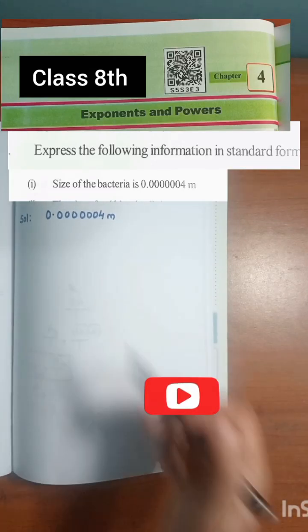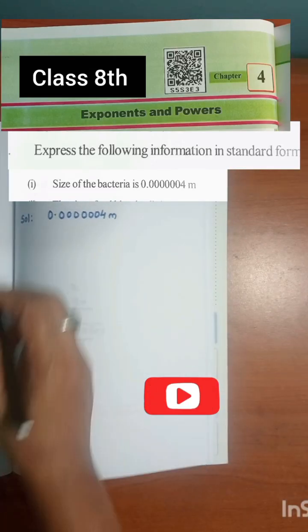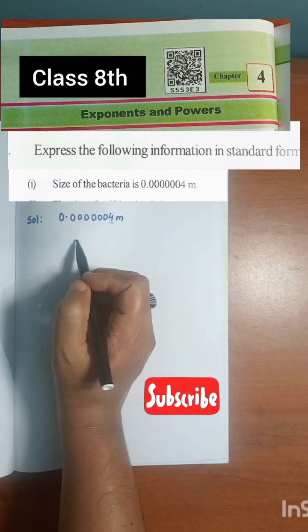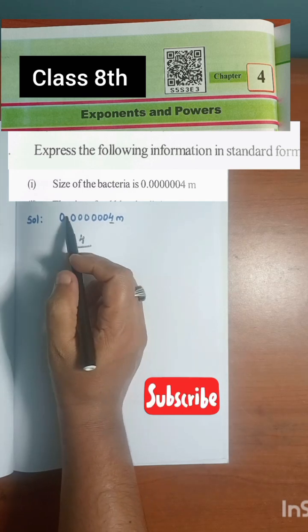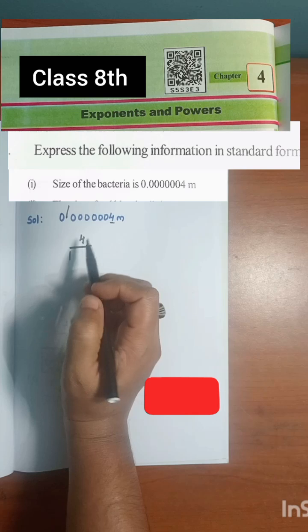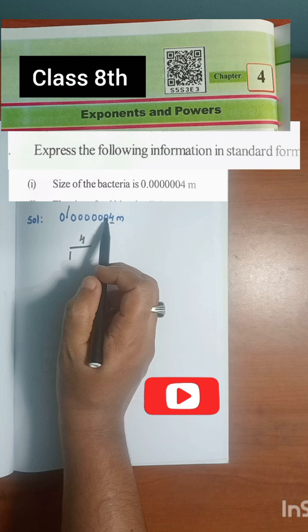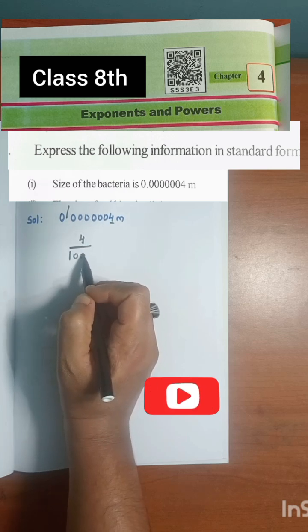So we have to convert this number to standard form. Remove this point. The zeros after the decimal and before the number: four is the number, so write four here. Next, to remove the point, one goes in the denominator. Now, after the point there are seven digits (one, two, three, four, five, six, seven), so seven zeros. One, two, three, four, five, six, seven.